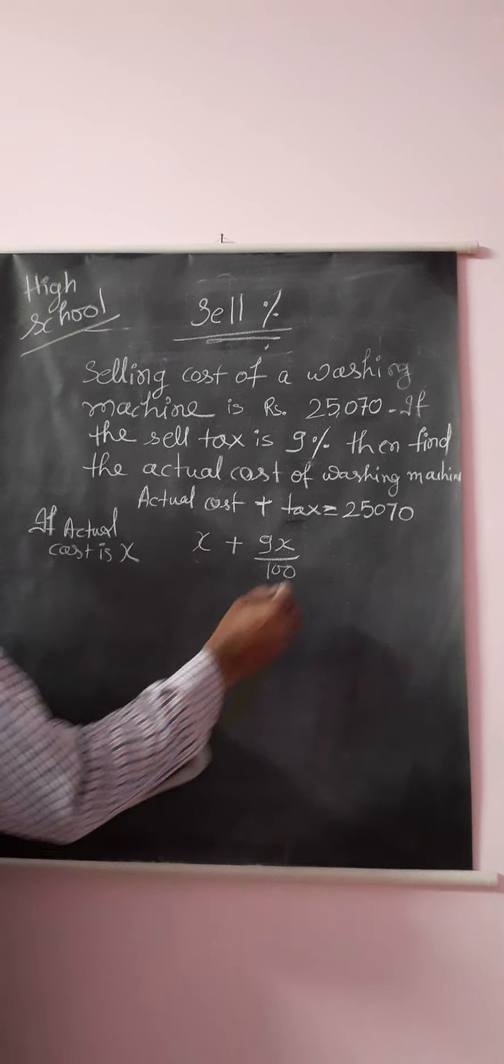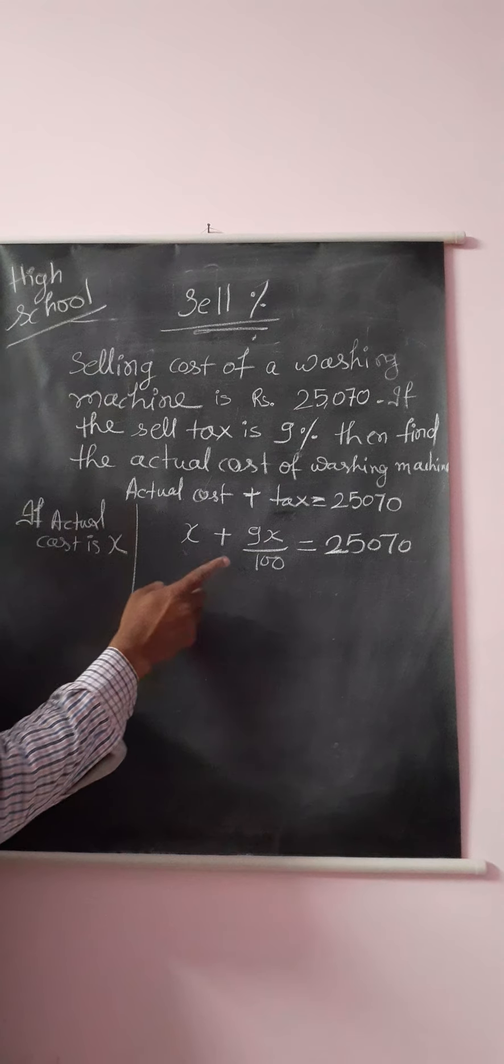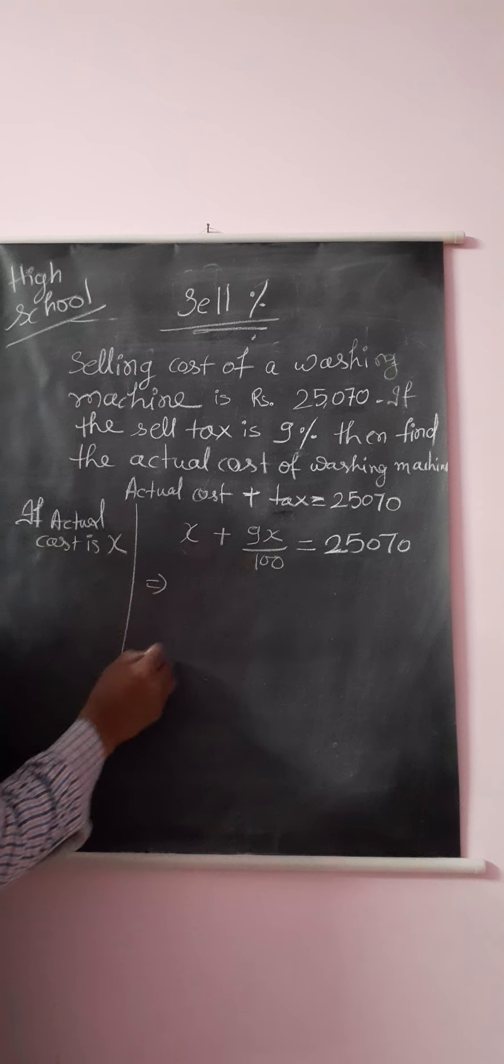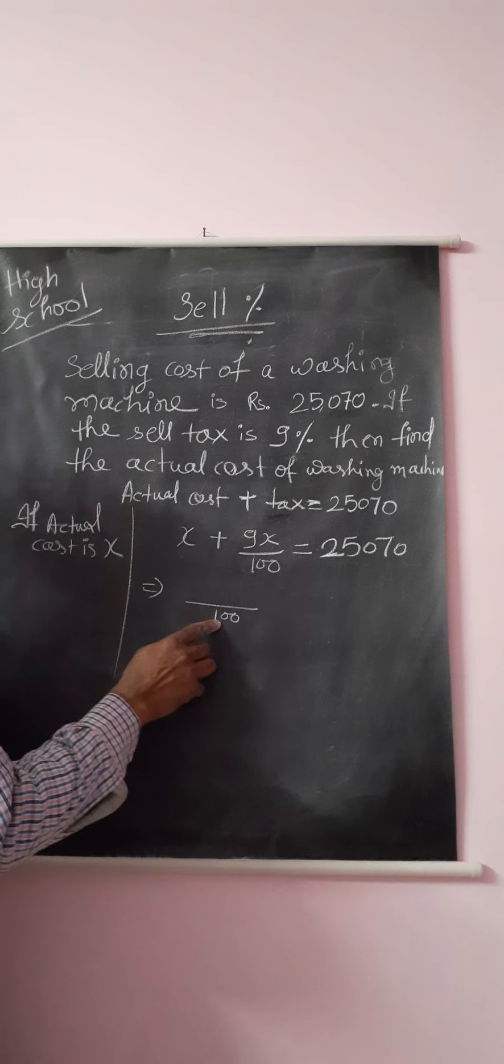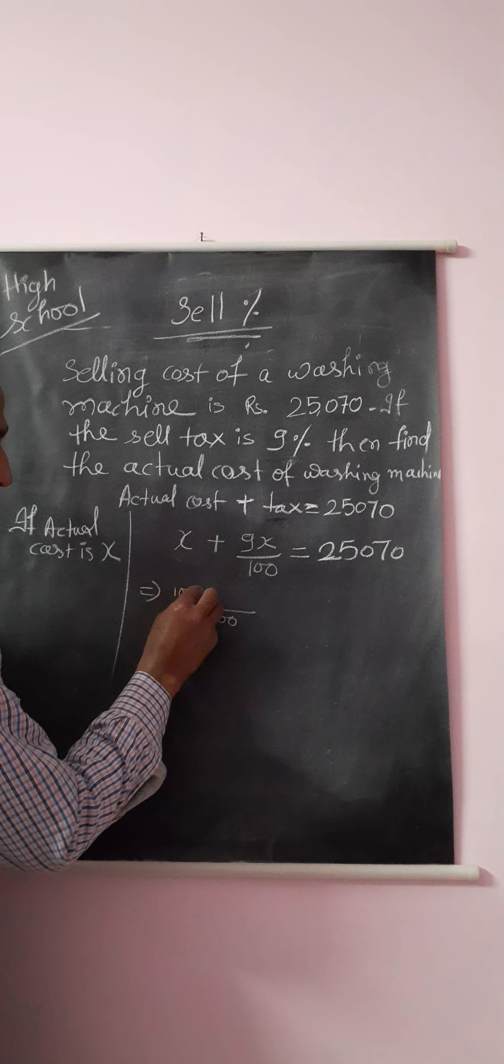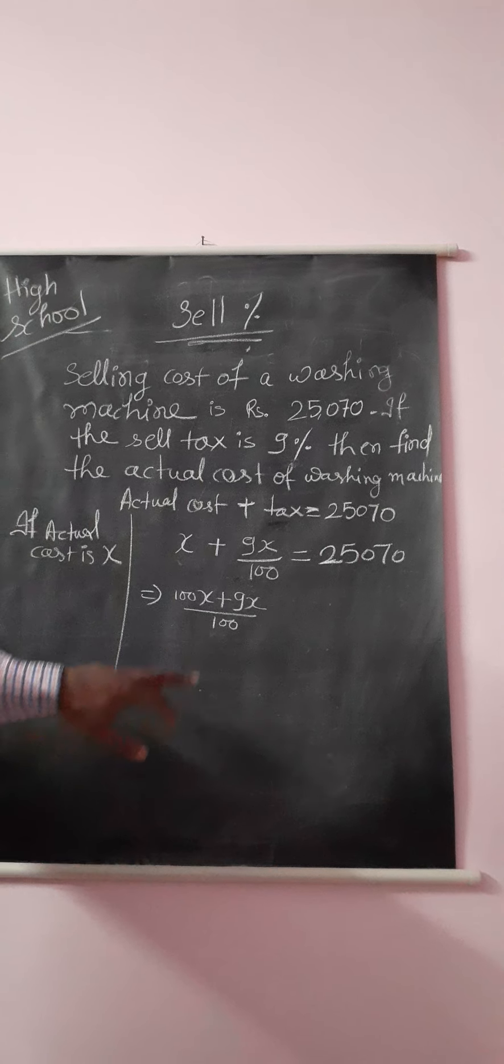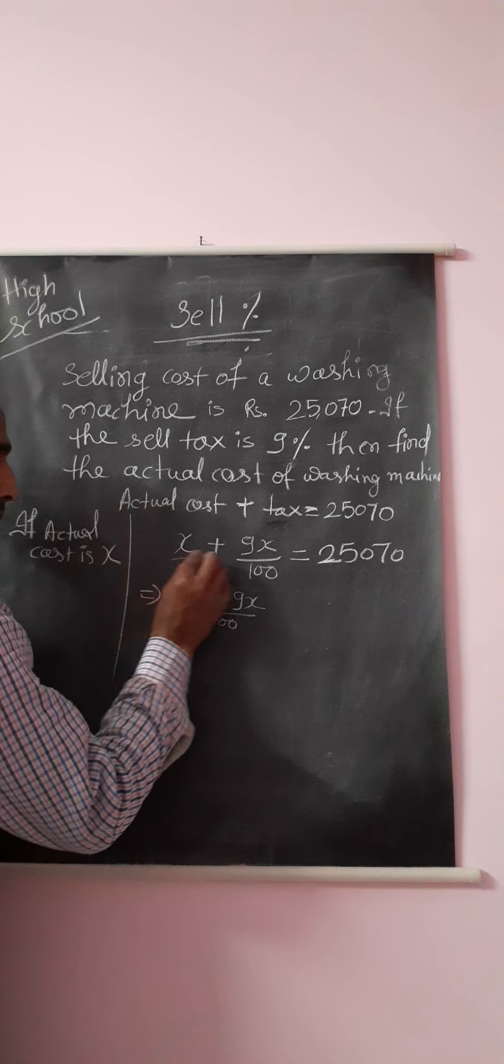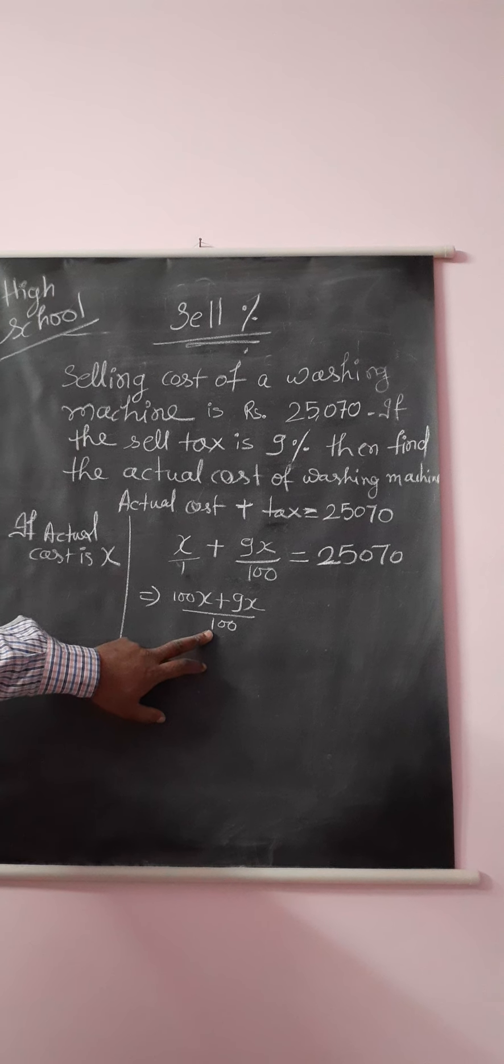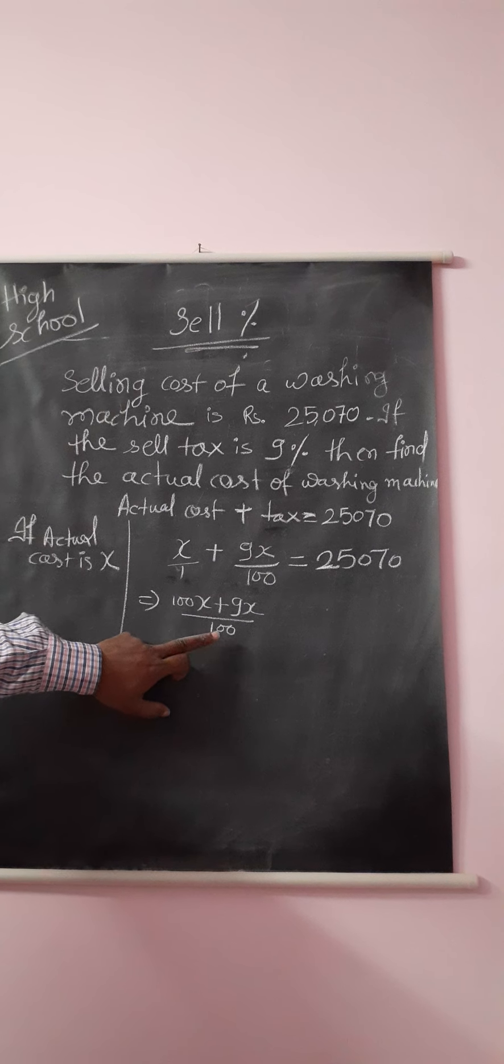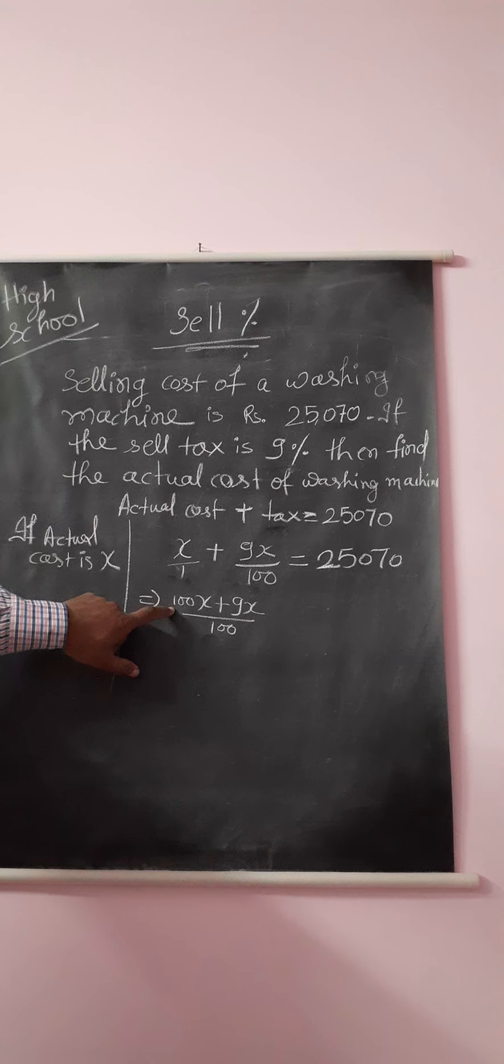When the tax part and the actual cost are added simultaneously, then we will get 25,070 rupees. From here we will get 100x plus 9x. How? Because here it is 1 and here it is 100. The LCM is 100. When I divide 100 by 1 we get 100, and this 100 will be multiplied by the numerator x, so it will be 100x.